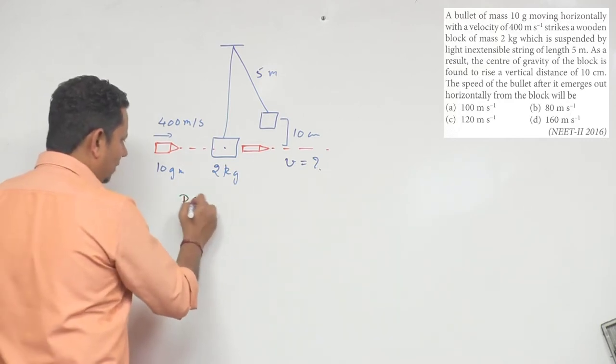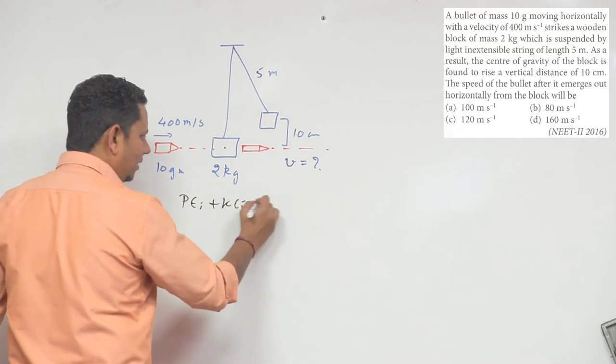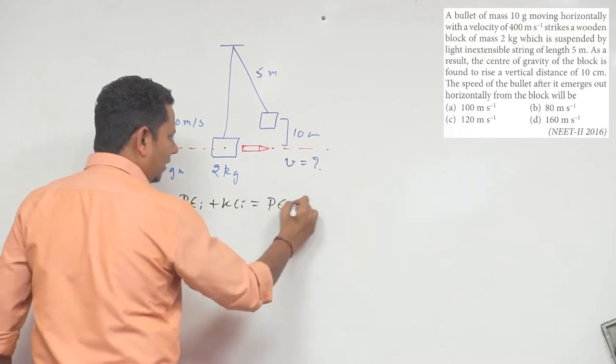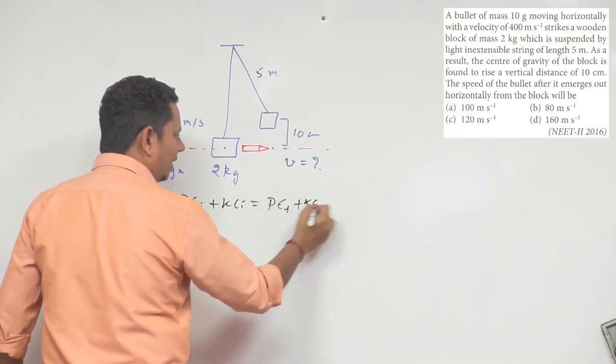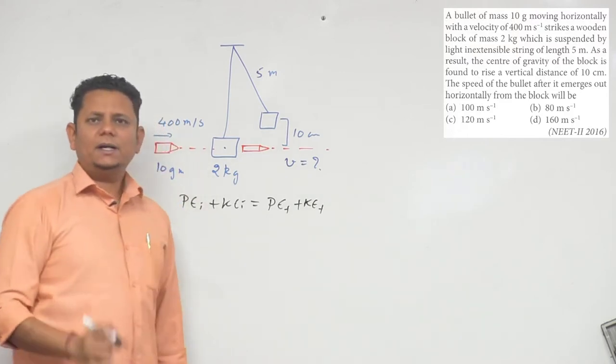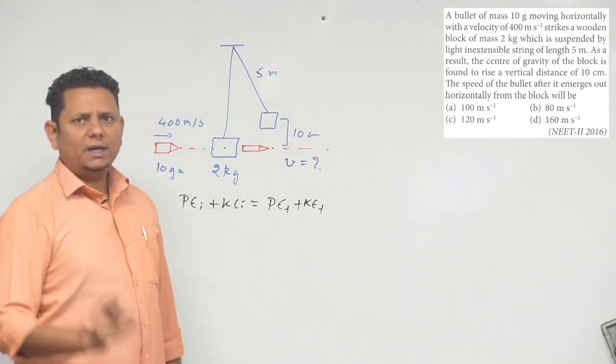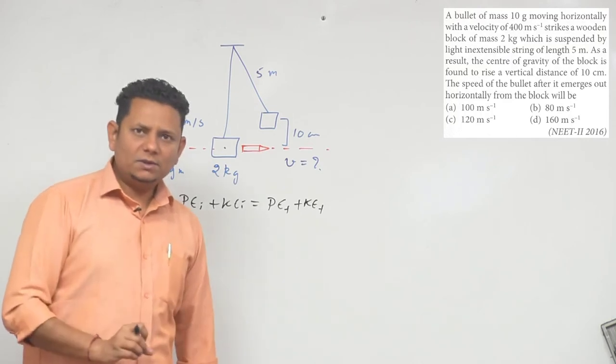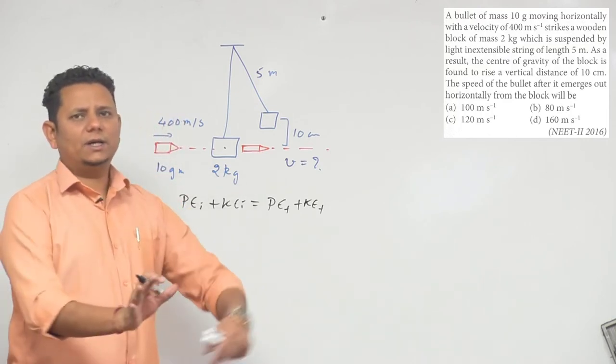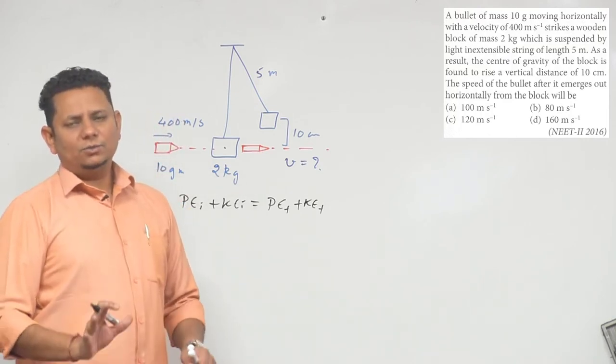final. We're applying energy conservation here. Our assumption is that work done by external forces, non-conservative forces, and pseudo forces is zero—no energy is lost. In this case, if we take this level as zero gravitational potential